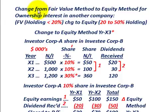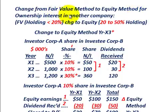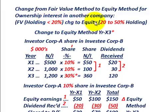What we're going to be going over here is changing from the fair value method to the equity method for an ownership interest in another company. You use the fair value method where you have a holding interest less than 20%, and you change to the equity method if your holding interest increases from 20% to 50%. So that's going to be our example here.